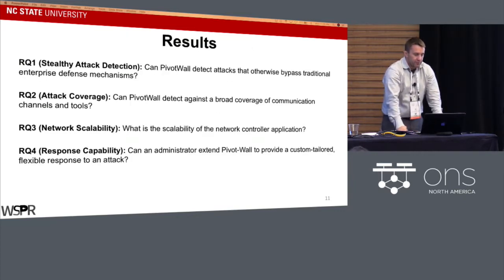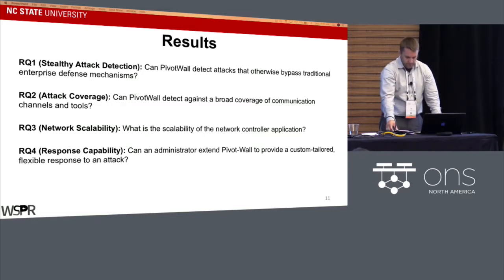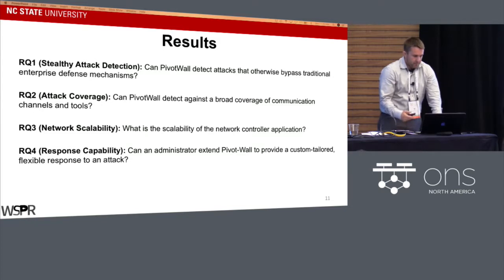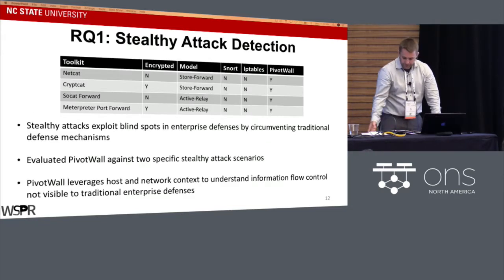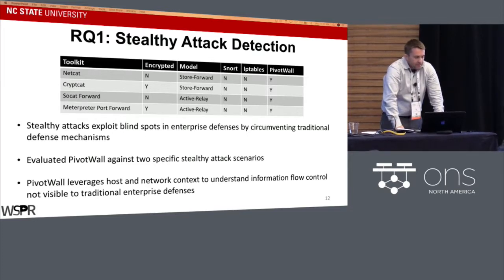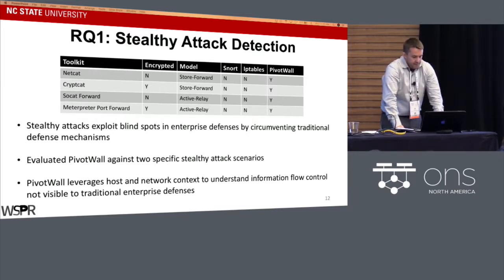In our evaluation, we asked four key research questions. The first was how PivotWall performs against stealthy attacks. We looked at two scenarios: store-and-forward, where a stepping stone or intermediate host stores data before exfiltrating it out of the network, and active relay, where data is copied through a process to a new network connection. We tested both with and without encryption.